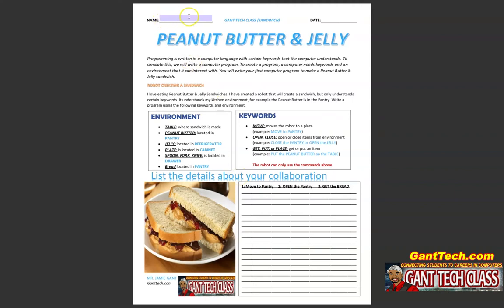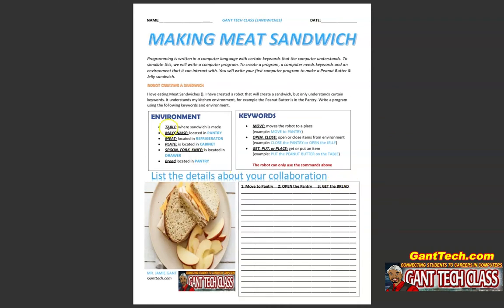To complete this activity, make sure you write your name and the date. Down here, you're going to write out your commands for my robot to make a peanut butter and jelly sandwich or a meat sandwich. If you're using a meat sandwich, you have different environments. The keywords are the same, but the table is the same, mayonnaise is in the pantry, meat is in the refrigerator, plate is still in the cabinet, spoon, fork, and knife are still in the drawer, and bread is still in the pantry. So using either one, you're going to write these steps to create a sandwich — a computer program to make a sandwich.